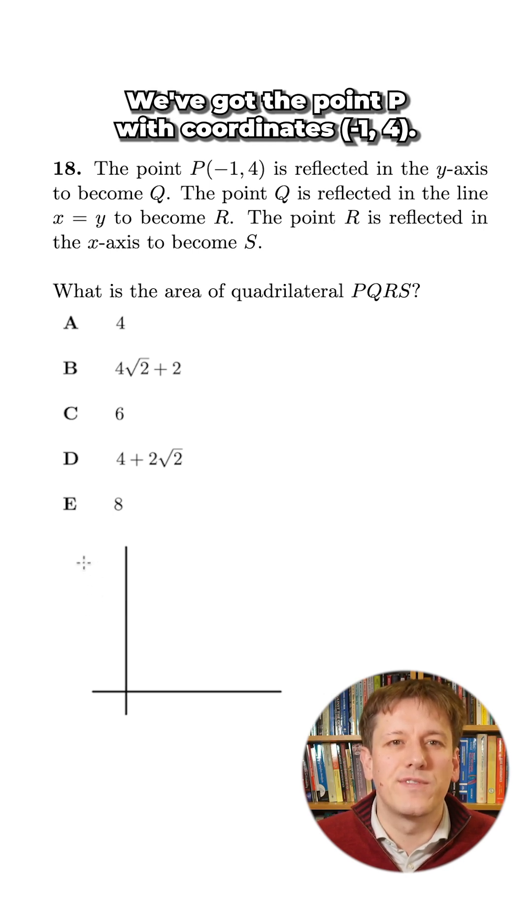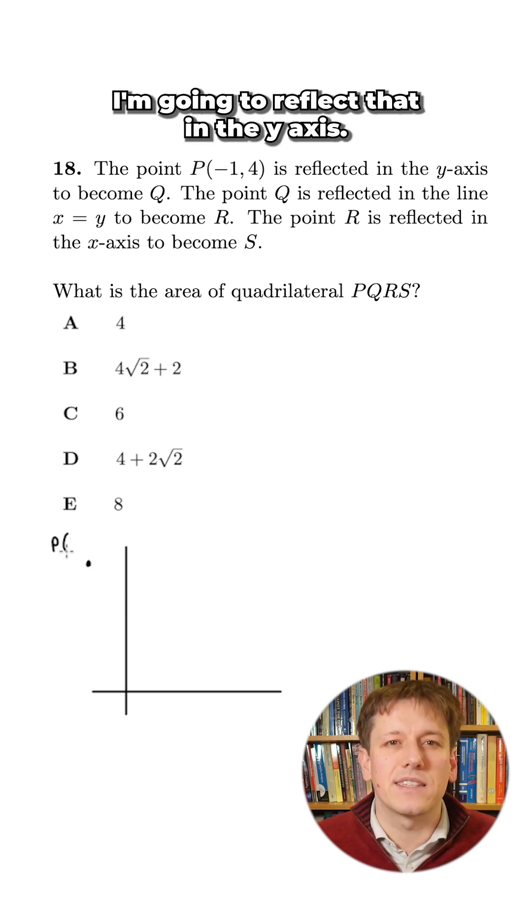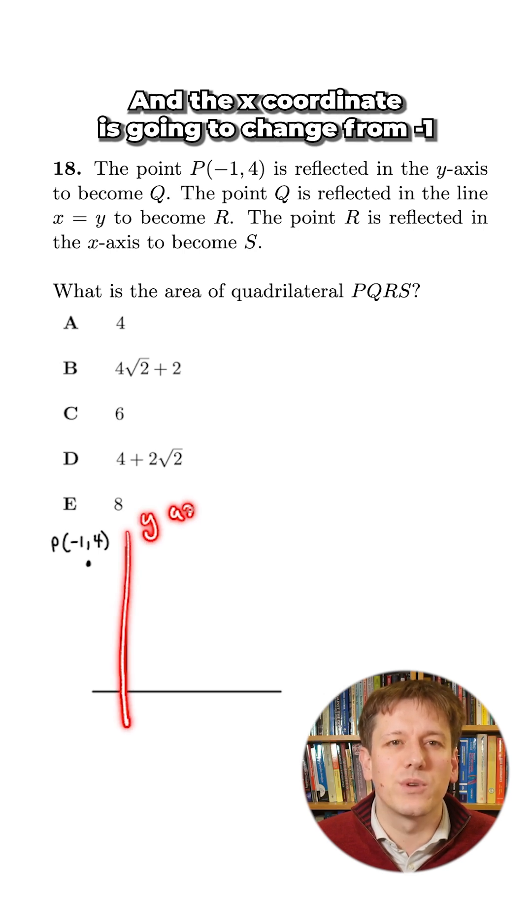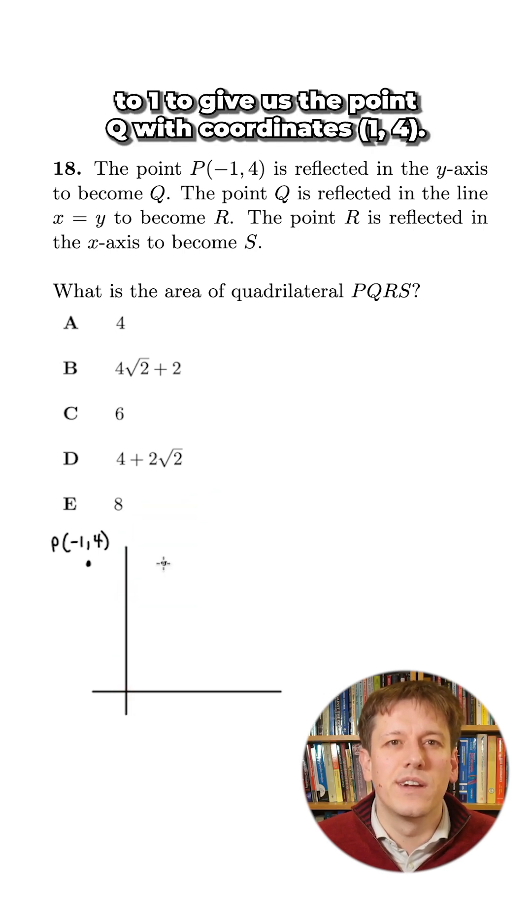We've got the point P with coordinates minus 1, 4 that will be over here. I'm going to reflect that in the y-axis so the y-coordinate is going to stay the same and the x-coordinate is going to change from minus 1 to 1 to give us the point Q with coordinates 1, 4.